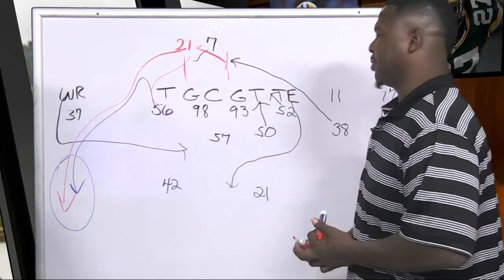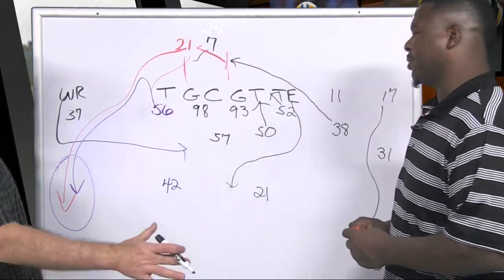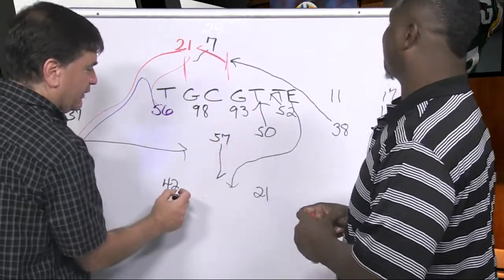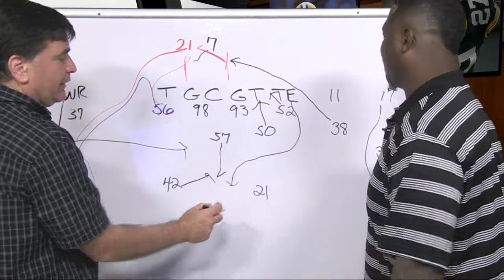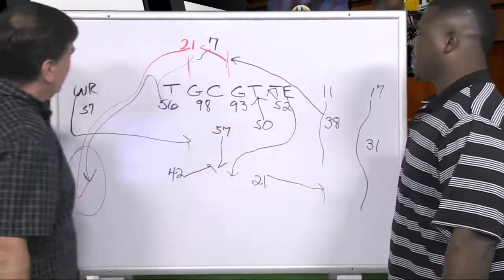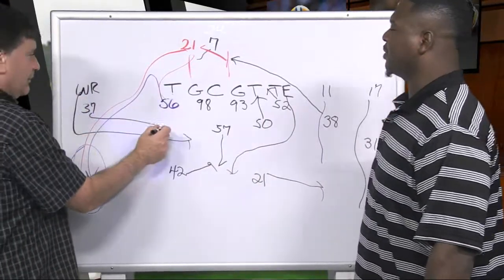And the thing about this, which is so head-scratching, is everybody did their job exactly right. Lattimore dropped to take this tight end. Burnett came to double that tight end. It was proper rotation. He came and rotated to get this guy. Yep. Shields came and covered this guy.